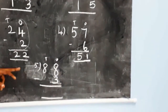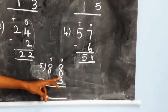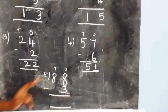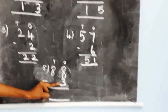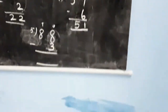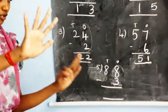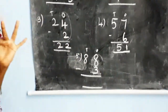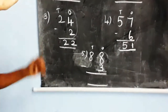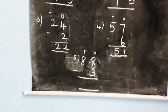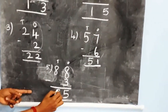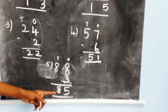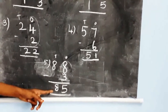Now look at the fifth sum: eighty-eight minus three. Subtract the ones place first. Here eight — take a finger of eight and subtract three: one, two, three. The balance is five. Then the tens place: eight minus zero is eight. So eighty-eight minus three is equal to eighty-five.